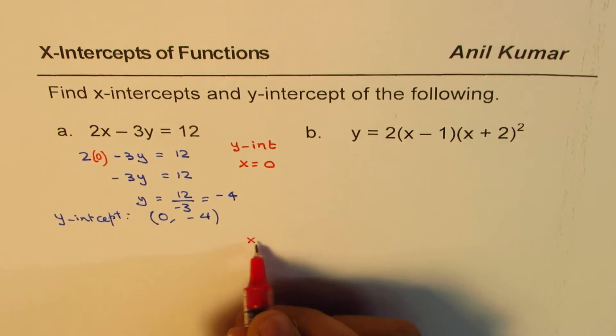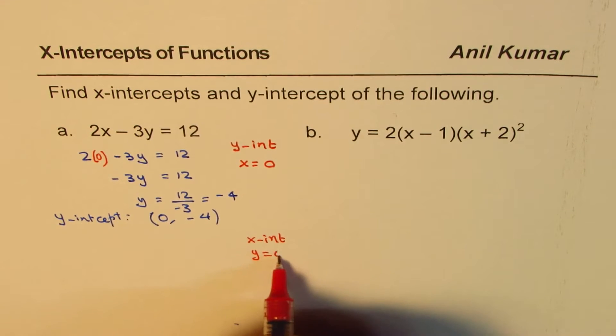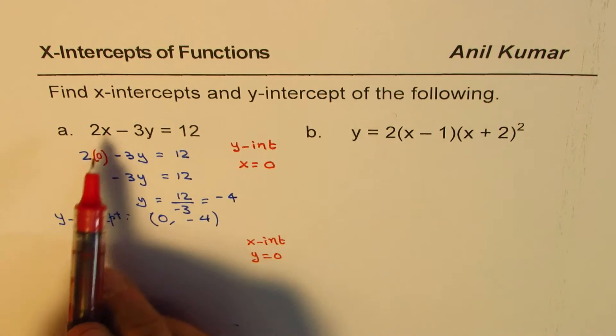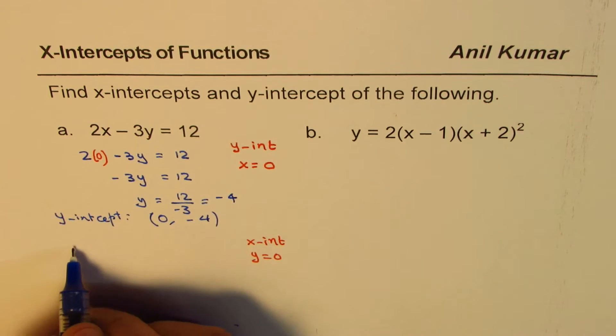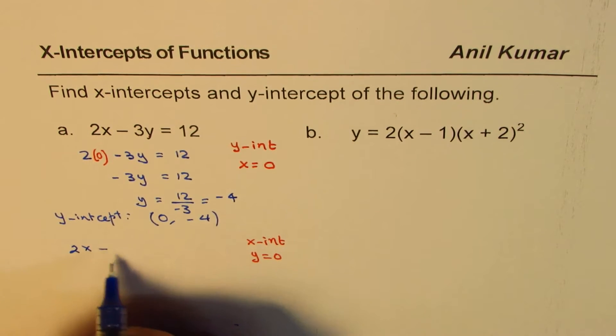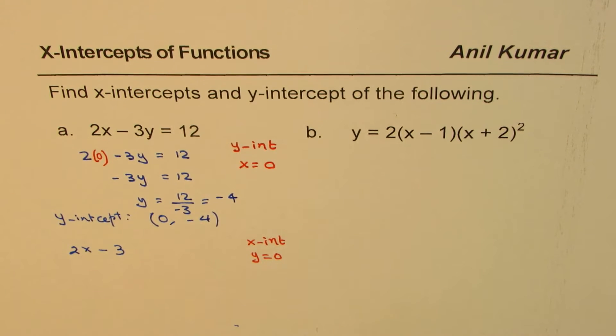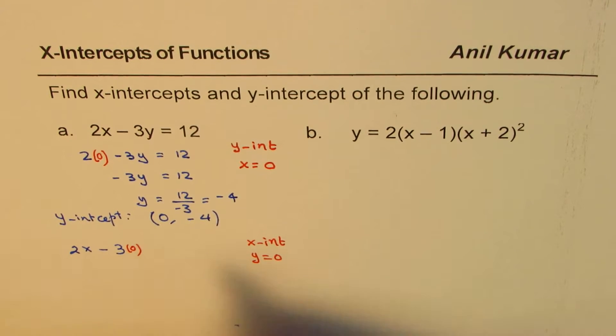Now let's look into the x-intercept part. For a straight line it's kind of simpler. Let's write down y equals 0. So if I write y equals 0, find x, I'll get the x-intercept. This time we get 2 times x minus 3 times, we have to substitute y as 0.